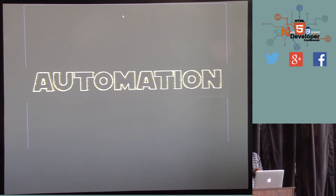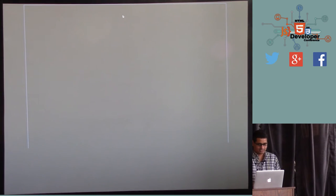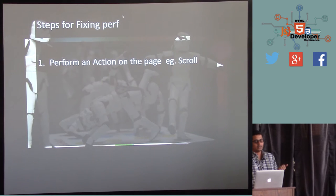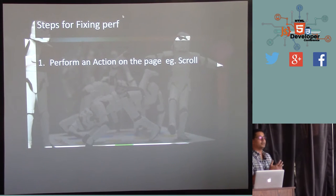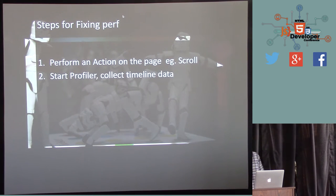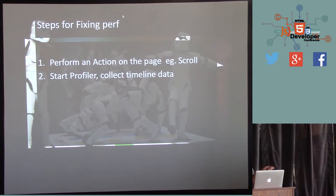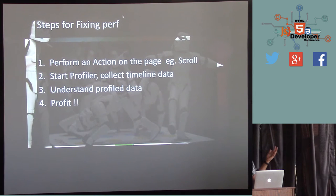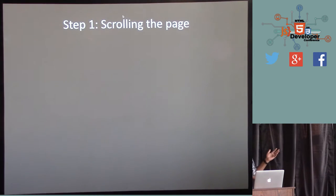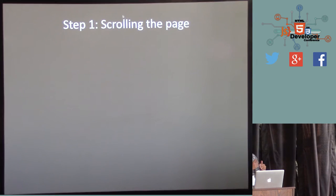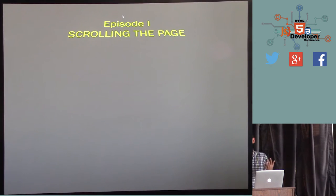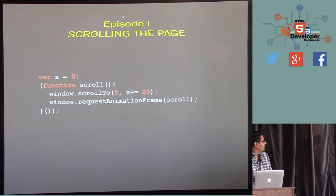The idea is to automate the rinse-and-repeat loop. I have approximately half an hour and in this time I'm going to write an application that automates the entire rinse-repeat cycle. Here are the steps: step one, perform a page action like scroll; step two, open Chrome and start the profiler to collect timeline data; step three, understand the timeline data; step four, profit — and repeat. Let's break this down and see how to automate all four steps, one at a time. Episode 1: scrolling the page.